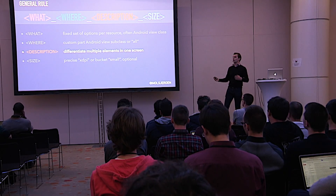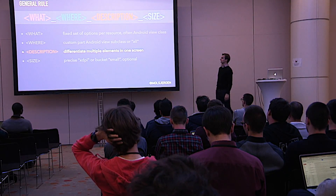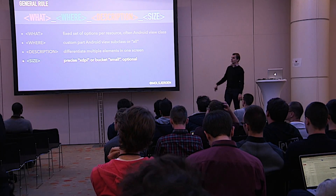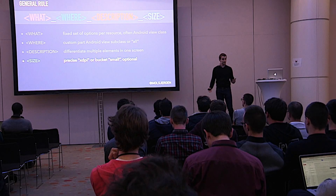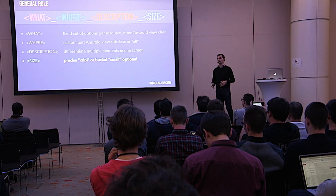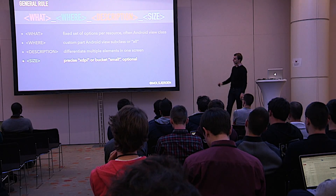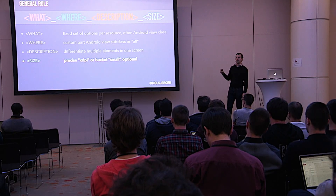Description is needed because you could have more than one button on the screen. The what is the same, the where is also the same, so you need to differentiate between those two. And last but not least, size is always an optional element — it could be a very precise size, exactly so many DPs, or it could be a size bucket: small, medium, or large. Let's now, one by one, go over the specific resources and see how this rule applies to them.